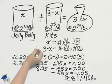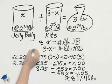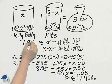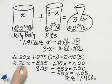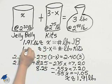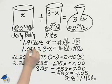How many pounds of Jelly Belly's is about 1.91 pounds. How many Kits? Roughly 1.09 pounds.